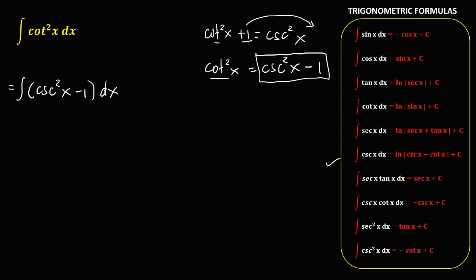This time we can integrate every term. So we have the integral of cosecant squared x dx, minus the integral of 1 dx.